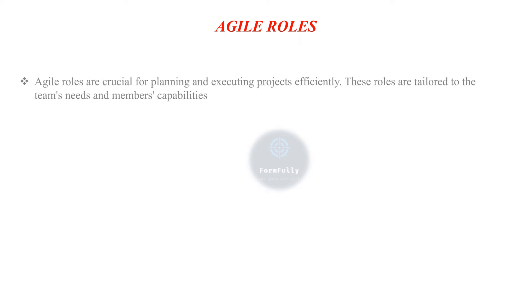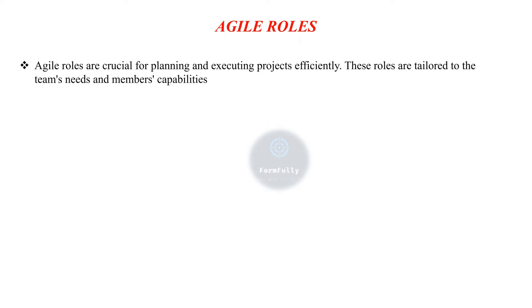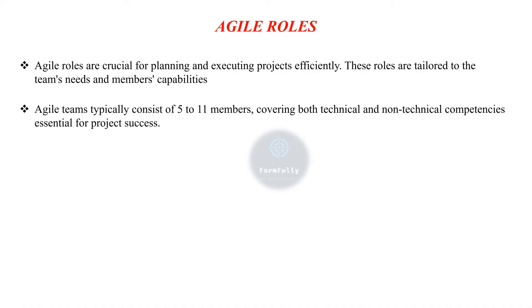The next point is Agile Roles. Agile roles are crucial for planning and executing projects efficiently. These roles are tailored to the team's needs and members' capabilities. Agile teams typically consist of 5 to 11 members covering both technical and non-technical competency essential for project success.